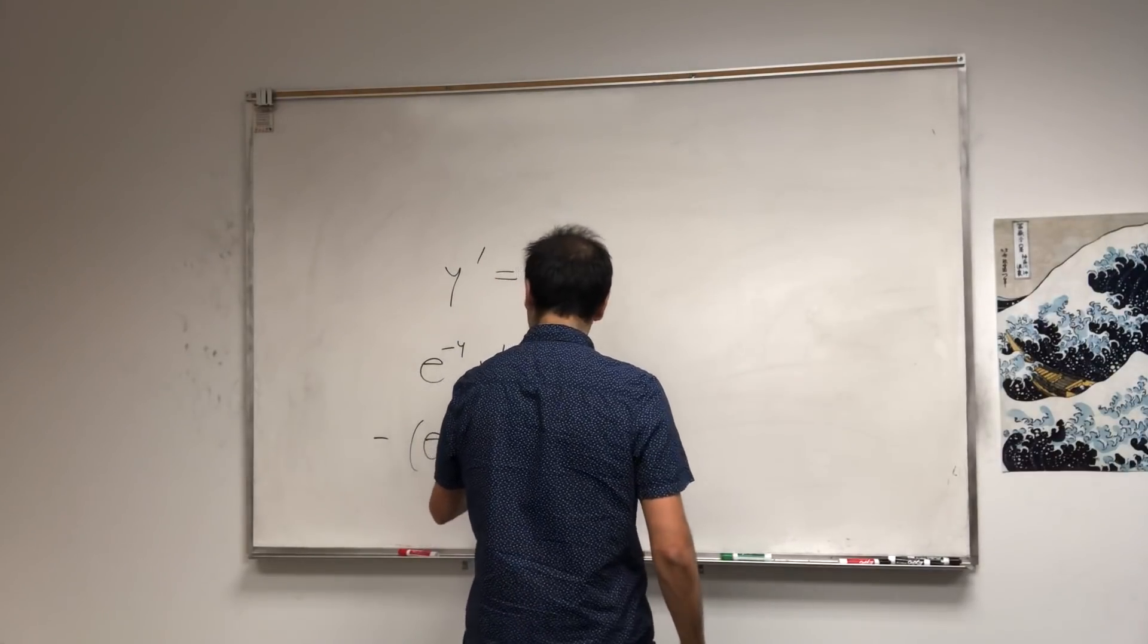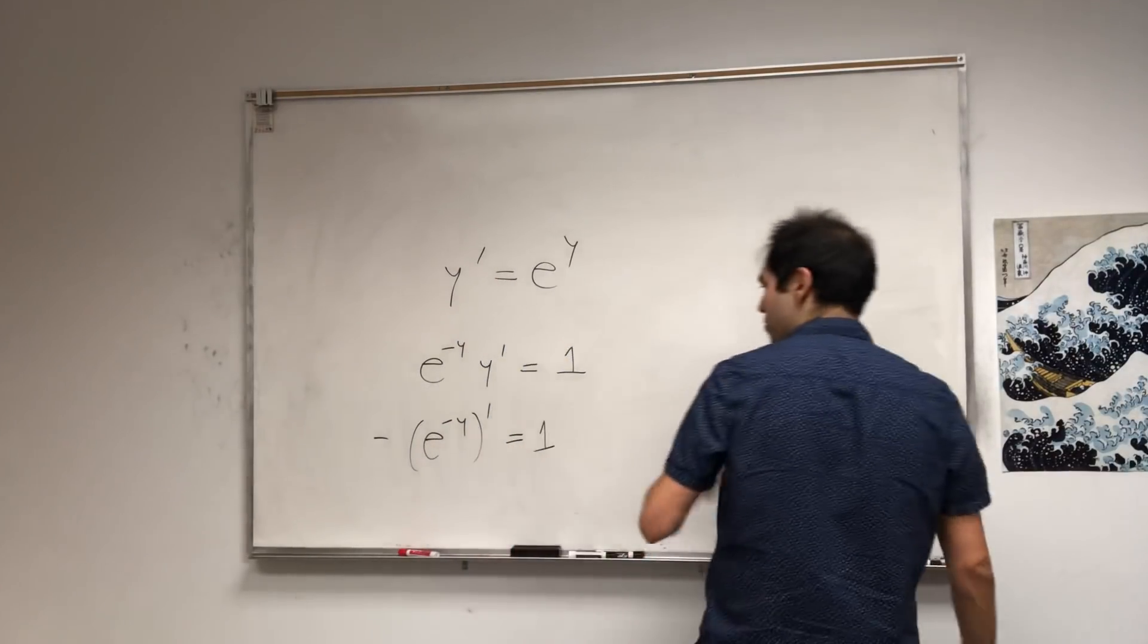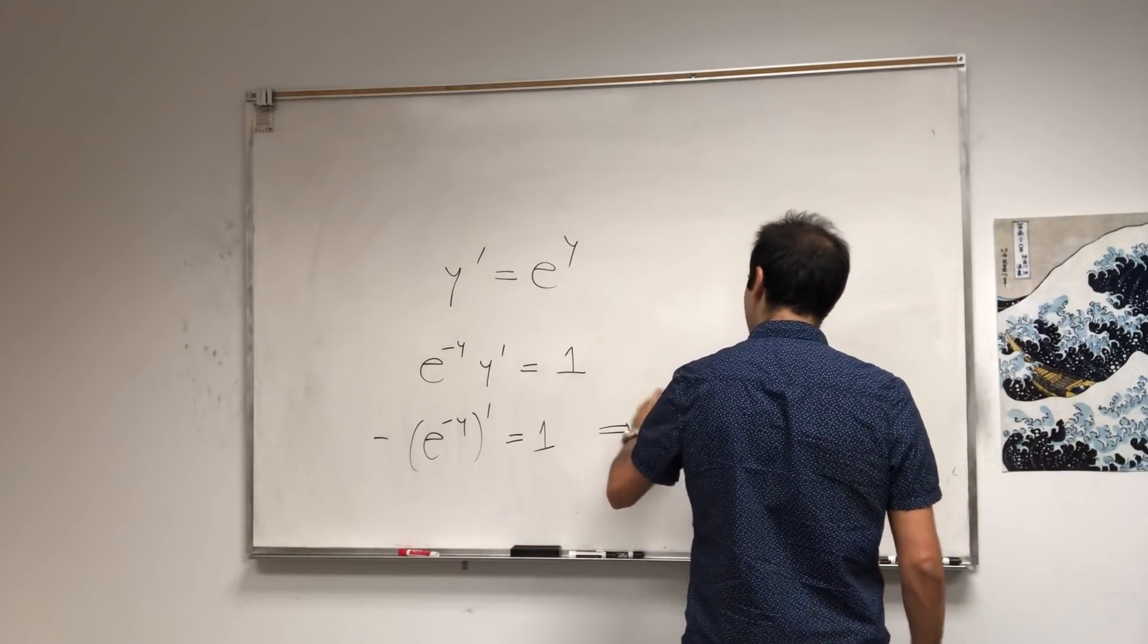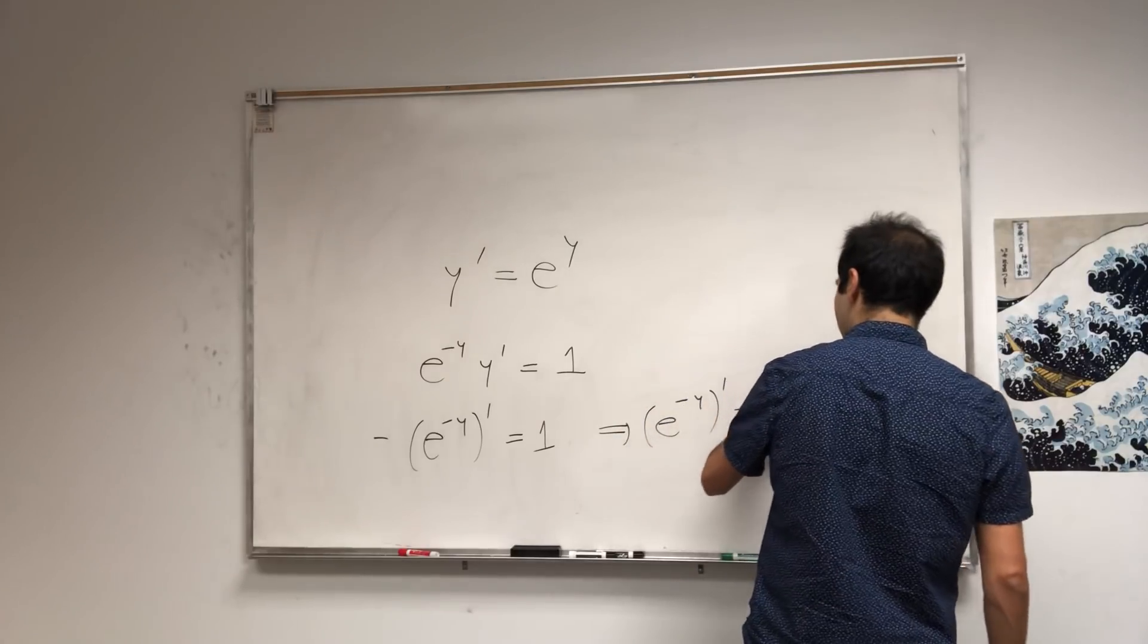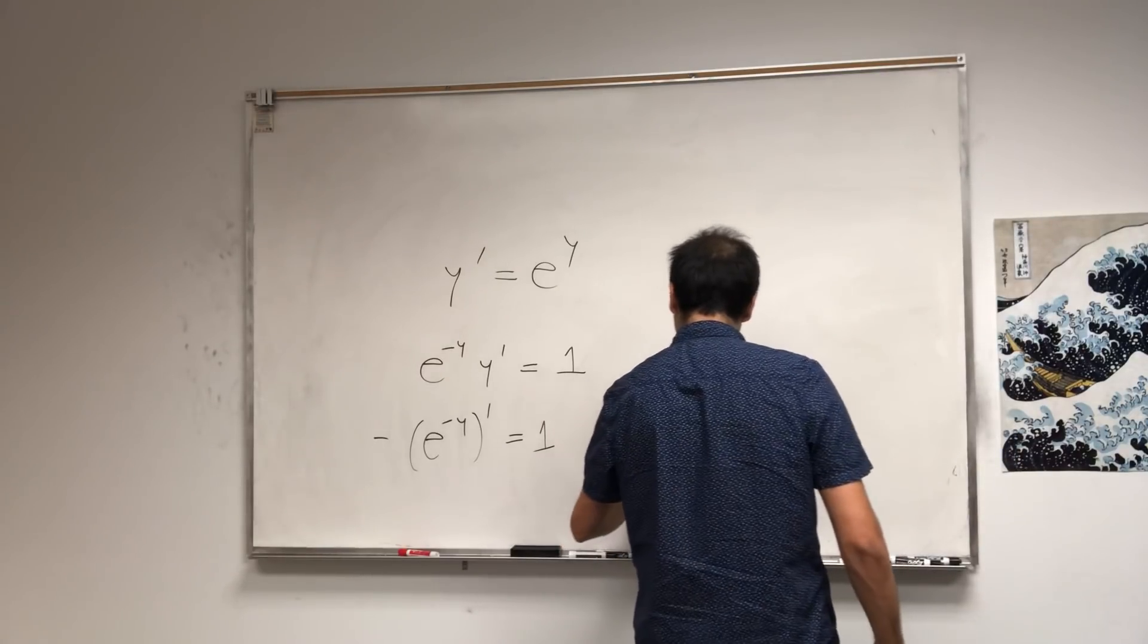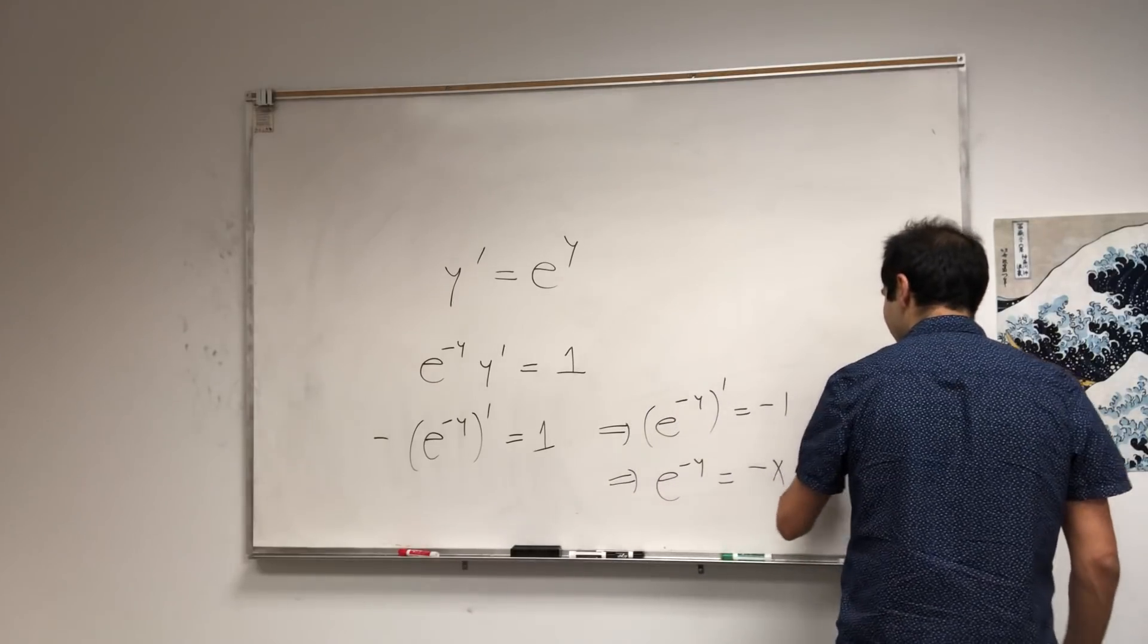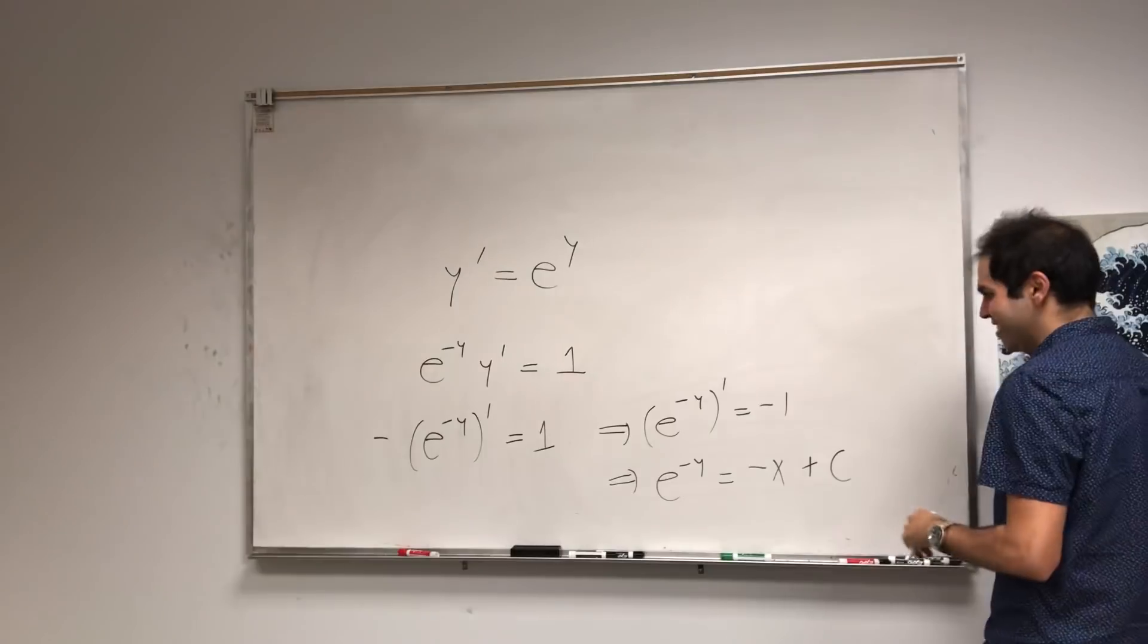you put a minus here. So minus e to the minus y prime is 1. So e to the minus y prime equals minus 1. So e to the minus y equals, if you want, minus x plus a constant. I almost forgot about the constant.